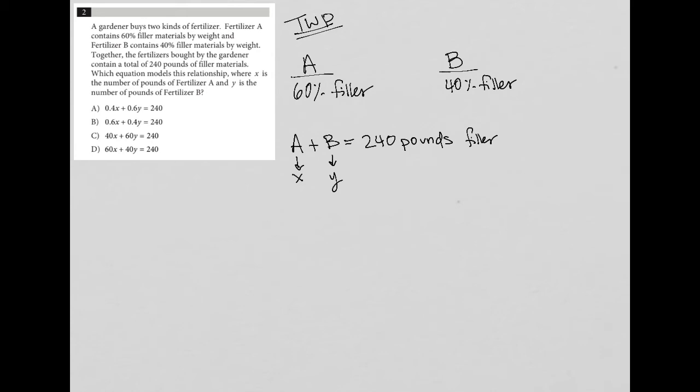So how do I translate this? I have this equation here. But what does this actually mean? This is telling me that the amount of filler in A plus the amount of filler in B is equal to 240 pounds. Whereas this X represents the total amount of fertilizer A. So how much of fertilizer A is filler?